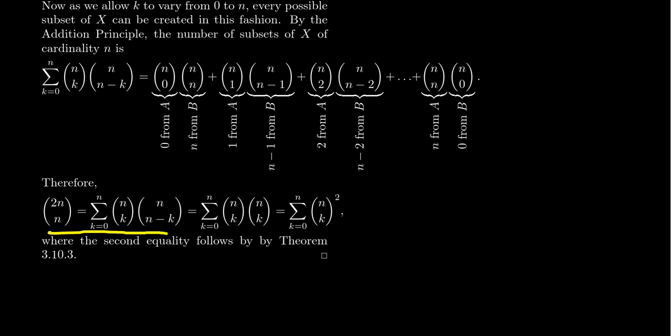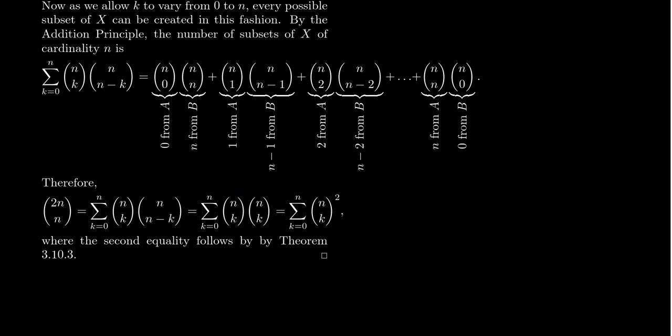By combinatorial proof, this sum equals 2n choose n. But wait — n choose n minus k is the same as n choose k, which we proved as the very first theorem in this video. Substituting, n choose k times n choose n minus k becomes n choose k squared. So we end up with the formula: the sum from k equals zero to n of n choose k squared equals 2n choose n. That brings us to the end of this proof and the end of this video.